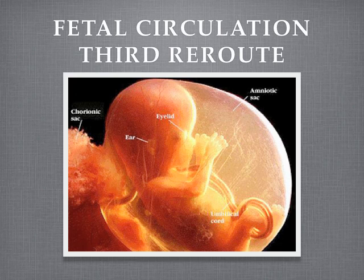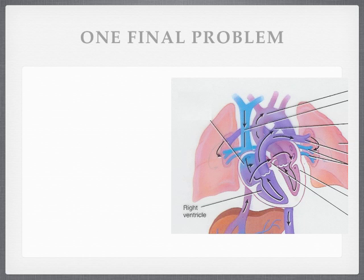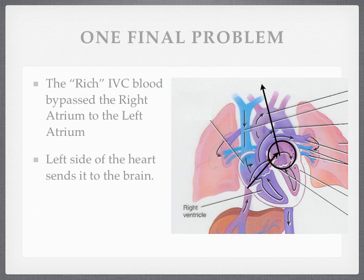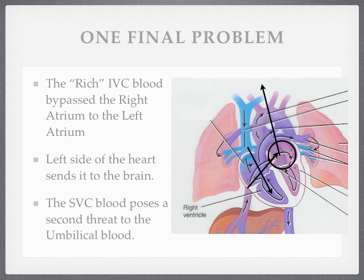So now we want to see what else — there is one more problem we need to deal with. This final problem has to do with that superior vena cava blood. The rich inferior vena cava blood bypassed the right atrium, jumped to the left, and that's why we see that good blood in the aortic arch. But we need to look at the superior vena cava blood one more time and see that there would have been one more problem. That superior vena cava blood still poses a second threat to our umbilical blood.